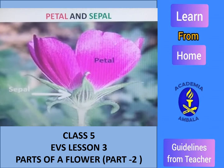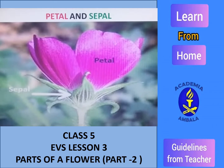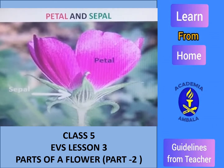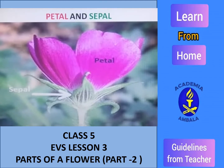You can see in the picture, at the bottom of the flower, you see green tiny leaves which are called sepals. They support the flower and protect it when it is a bud. Just above it, you can see the colorful part which is pink in color — that is called petals. It attracts the insects. The whole flower is attached to the stem by a stalk. These are the external parts of the flower.